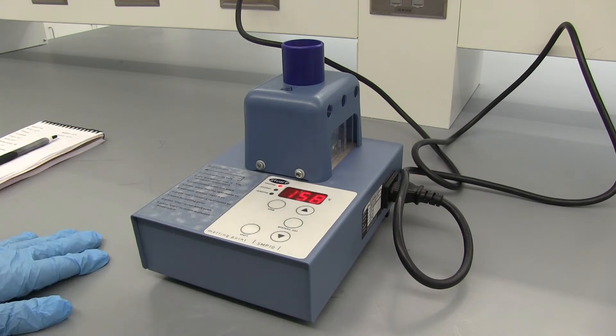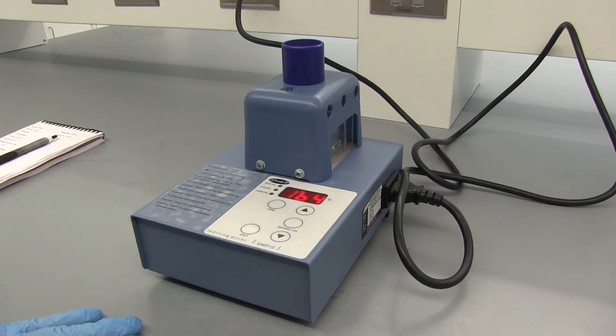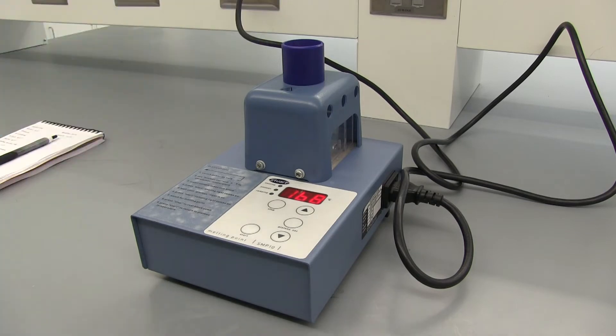And so now we're going to do a slow melting point starting a bit below 126 degrees Celsius and we'll ramp it slowly once we get to that point. So to stop it go ahead and press stop and it'll begin cooling down the block and we're going to go and make up another sample to do our slow melting point.